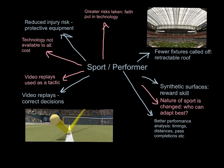We also said video replays allow correct decisions to be made, but some performers will start to use these replays as a tactic to deliberately slow play down and throw their opponent off. That's not good for the sport or the performer. In terms of retractable roofs and synthetic surfaces, yes there are fewer fixtures called off — but what we've done is changed the nature of the sport. Isn't sport about a little bit of unpredictability? A bad bounce, a bad roll of the ball, a dodgy decision?